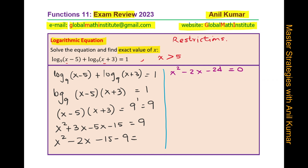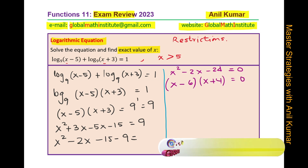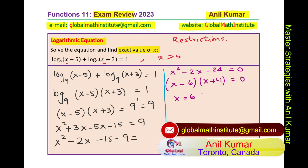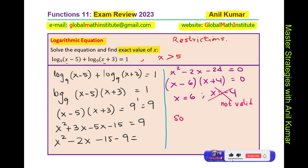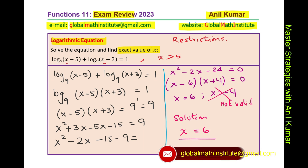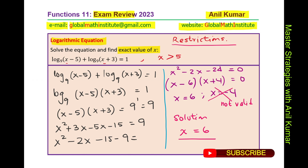Factoring x² - 2x - 24 = 0: product is -24, sum is -2, giving factors (x - 6)(x + 4) = 0. So x = 6 or x = -4. Since our restriction requires x > 5, x = -4 is not valid — it is an extraneous root. The only solution is x = 6. It is important to look at restrictions so you get the exact answer and do not include the extraneous root. Thanks for your time and all the best.